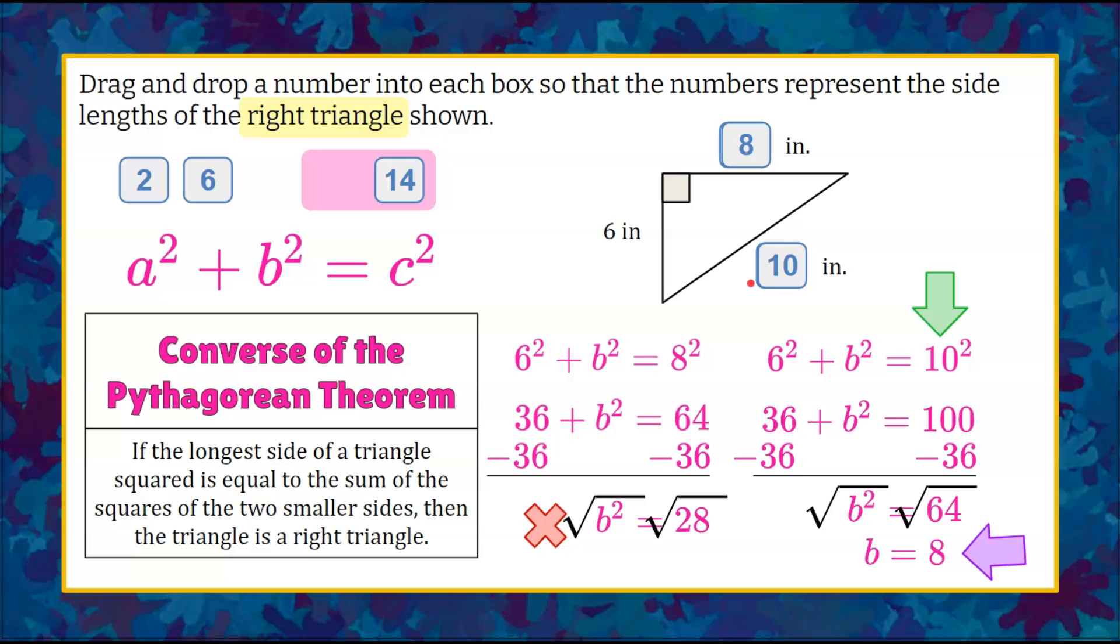Let's clear this workspace so we can look at this. So we know that because 6 squared plus 8 squared is equal to 10 squared, then we can identify that the missing side lengths, our longest side or hypotenuse, is 10 inches and our missing leg is 8 inches.